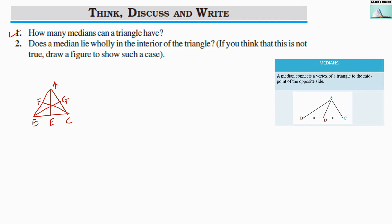So each triangle will have three medians. If we look here, how many medians are there? AE, next is BG, and next is CF. So three medians will be there for each and every triangle.